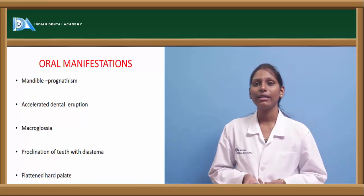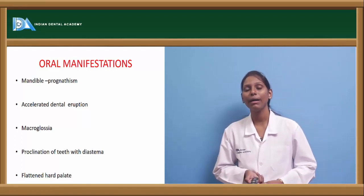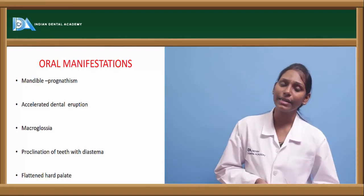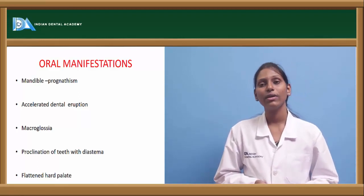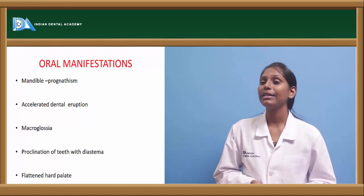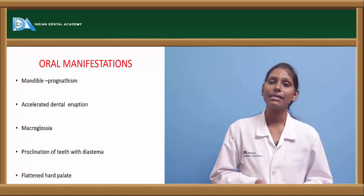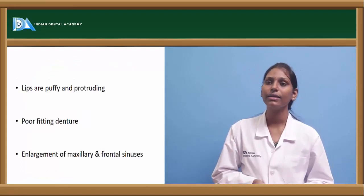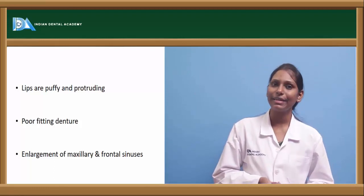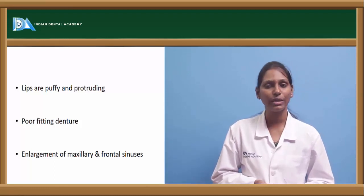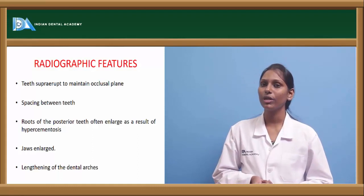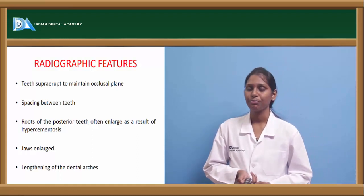Oral manifestations of acromegaly include mandibular prognathism, accelerated dental eruption, macroglossia, proclination of teeth with diastema, flattened hard palate, puffy and protruding lips, poor-fitting dentures, and enlargement of maxillary and frontal sinuses.